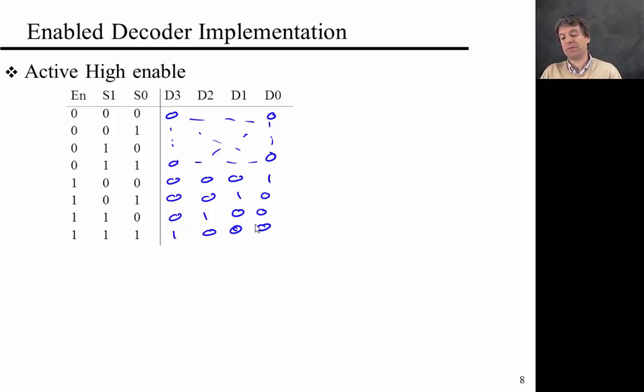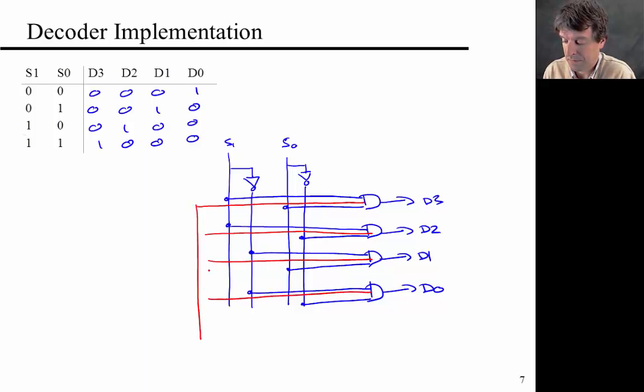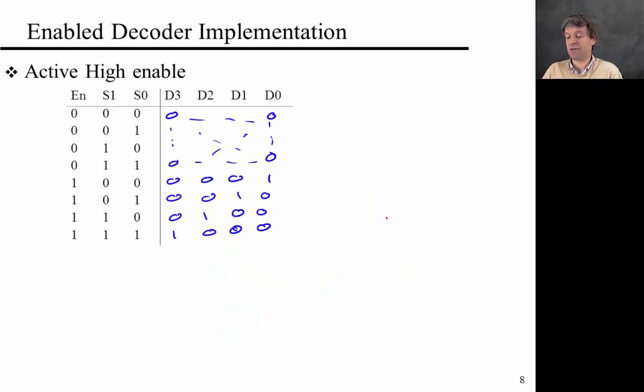So only when the operator enables the decoder and puts in the code does somebody actually get called. I'm not going to redraw the whole thing, but the way to realize this is essentially by just adding together an enable input with the other inputs. So you have an enable input here. This is enable. If enable is true, the whole system acts as a decoder. If enable is false, nothing happens at all. So that's a useful element.